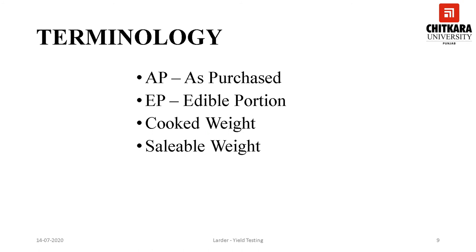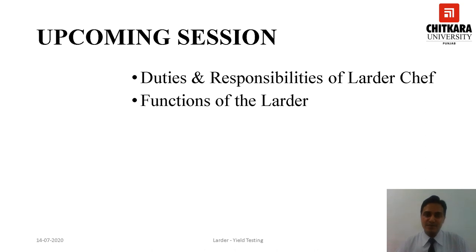There are certain terms generally used in association with yield testing. First is AP, which stands for 'as purchased' — the portion of food that is in the raw state before cutting, processing, or cooking has occurred. Next is EP, which stands for 'edible portion' — used in food composition tables to indicate the part of the food that is usually eaten, after excluding skin or pips of fruits and vegetables and bones in meat and fish. The next is cooked weight, which is the weight of the item after it has been cooked as per the standard procedure. Finally, sellable weight is the unit weight or quantity which is served.